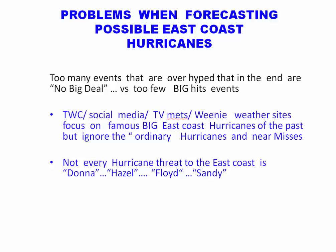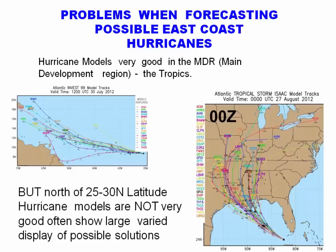The Weather Channel, social media, TV meteorologists, and weather websites love to focus on the big East Coast hurricanes of the past, but they tend to ignore the regular hurricanes — the near misses, the ones which turn out to be a storm but not the end of the world. Not every hurricane on the East Coast is going to be the next Donna, Hazel, Floyd, or Sandy. They just aren't, and you have to know the difference.